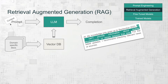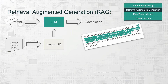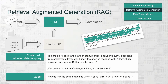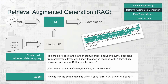When you ask a question, the LLM can use these stored chunks to add more context to the prompt, giving you a more accurate answer. For example, we can generate a context like: your AI assistant in a tech startup office, answering quick questions from employees. If you don't know the answer, respond: that's above my pay grade, better ask the intern. We can also attach a link to a specific document or PDF previously uploaded to our vector database, and the query itself can be something simple like: how do I fix the coffee machine when it says ER 404 burned and found?